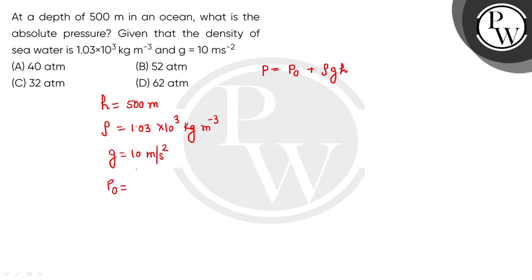What is P₀? P₀ is atmospheric pressure. We can add 1 atmosphere, or if we convert to Pascal, we can add 1 atmosphere approximately 1.01×10⁵ Pascal.